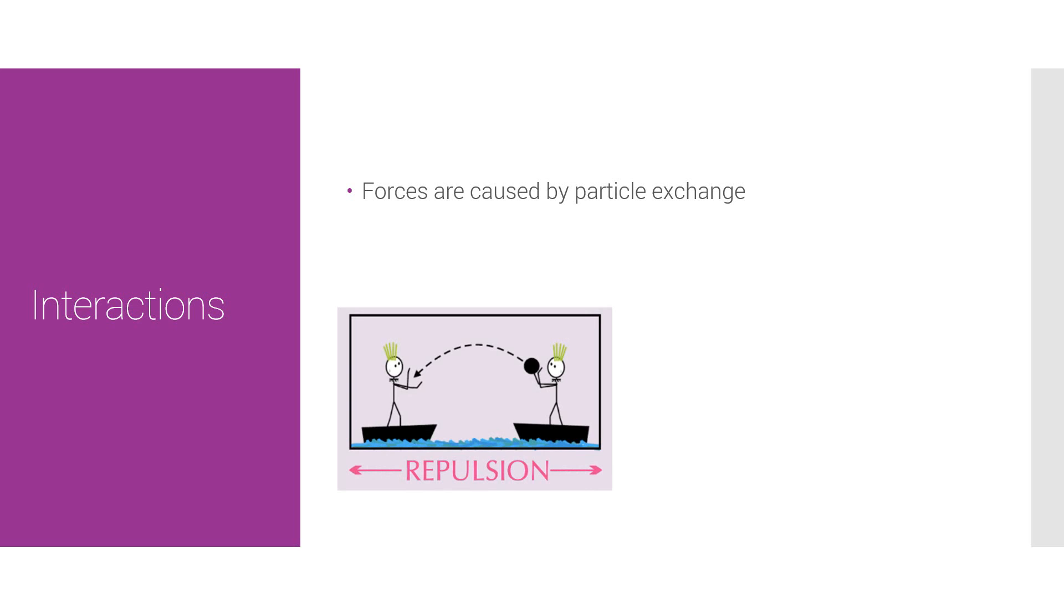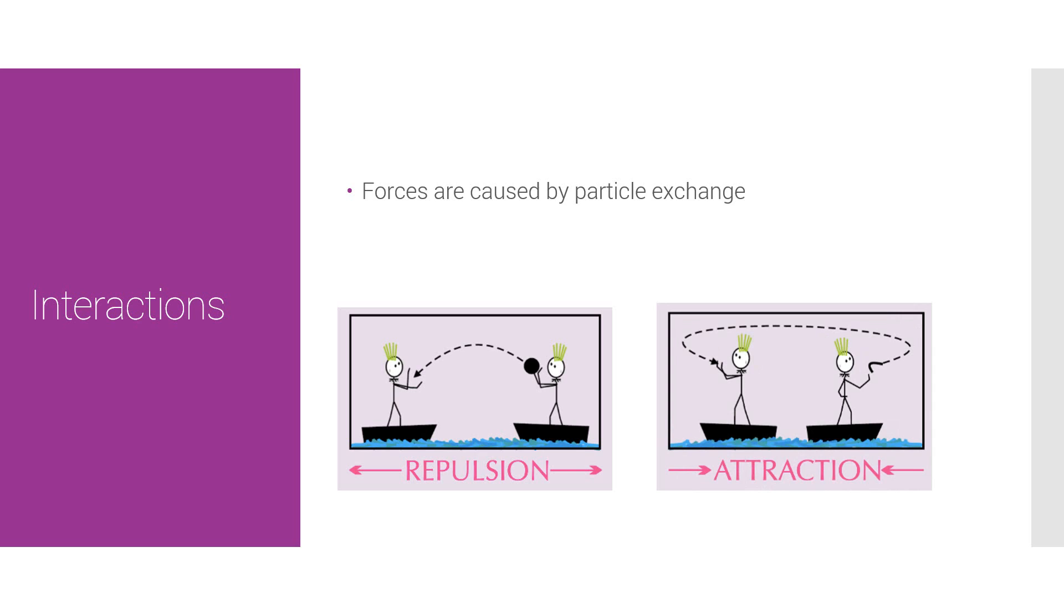The two humans on the little boats are examples of particles. Attraction can be explained by the boomerang example. The boomerang in this case is the exchange particle. One particle will throw the boomerang facing the other direction, which pulls him back, and the other one will catch it, which will throw him back.